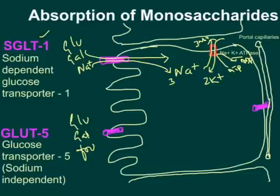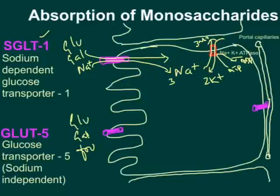SGLT1 indirectly consumes ATP — it does not directly use ATP, but ATP is needed for sodium-potassium ATPase so that SGLT1 can work. That is why SGLT1 is referred to as a secondary active carrier-mediated sodium-dependent glucose transporter. It relies on the sodium gradient to pull glucose and galactose into the cytoplasm.